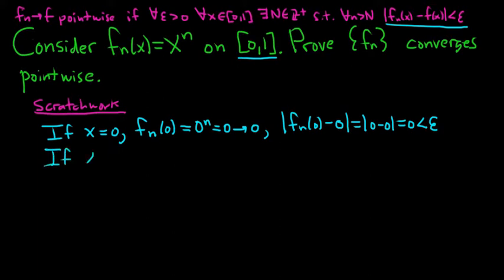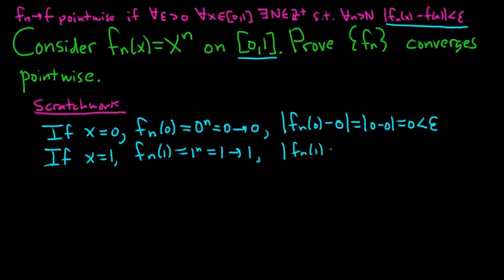If x equals 1, we look at f sub n of 1, and that's 1 to the n, which is 1. As n approaches infinity, this approaches 1. So in our proof we'll have |f sub n(1) − 1| = |1 − 1| = 0, which is less than epsilon. So both of these cases will be very easy to deal with in the proof.